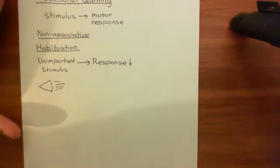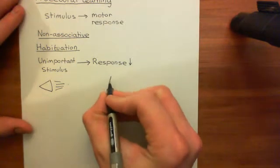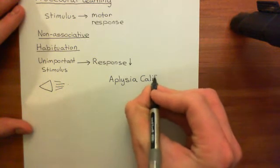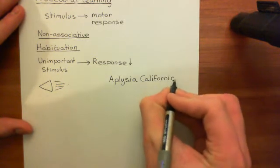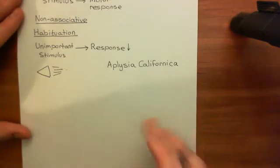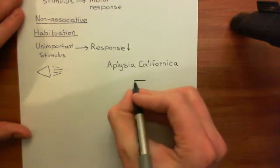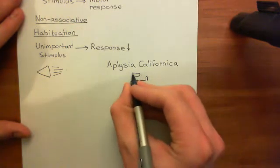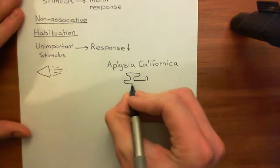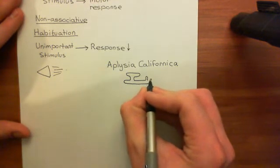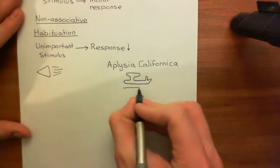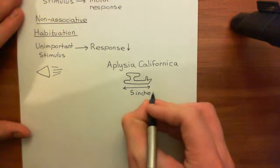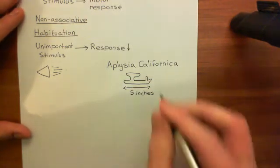Now we're going to see an example of habituation in a non-human species: Aplysia californica. Aplysia californica is basically a sea slug. They have a rather unusual structure with a sort of protrusion of their back. I would recommend you look at a picture of one of these — they are big things, around five inches long, and they live within the sea.